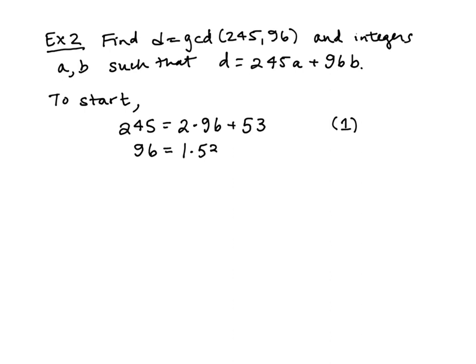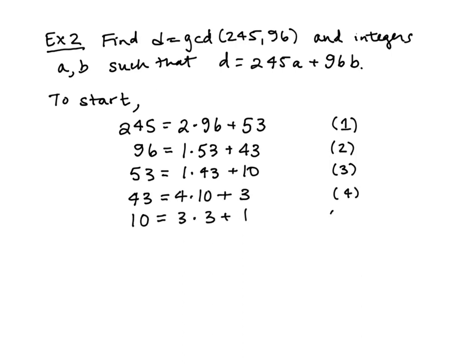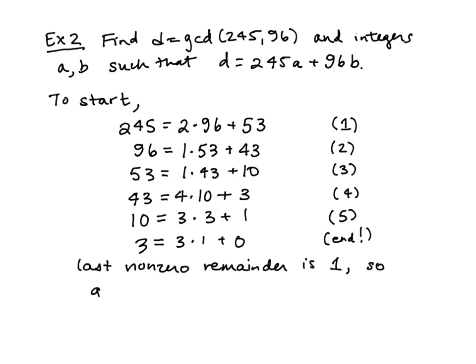Now we repeat this process a few times. We write 96 as a multiple of 53 plus a remainder. We repeat: 53 is 1 times 43 plus 10; 43 is 4 times 10 plus 3; 10 is 3 times 3 plus 1; and 3 is 3 times 1 plus 0. We're done because we hit a zero remainder. The last non-zero remainder is 1, so the GCD of 245 and 96 is 1. In the class where you learned about this, you probably recall that in this case we call 245 and 96 relatively prime.